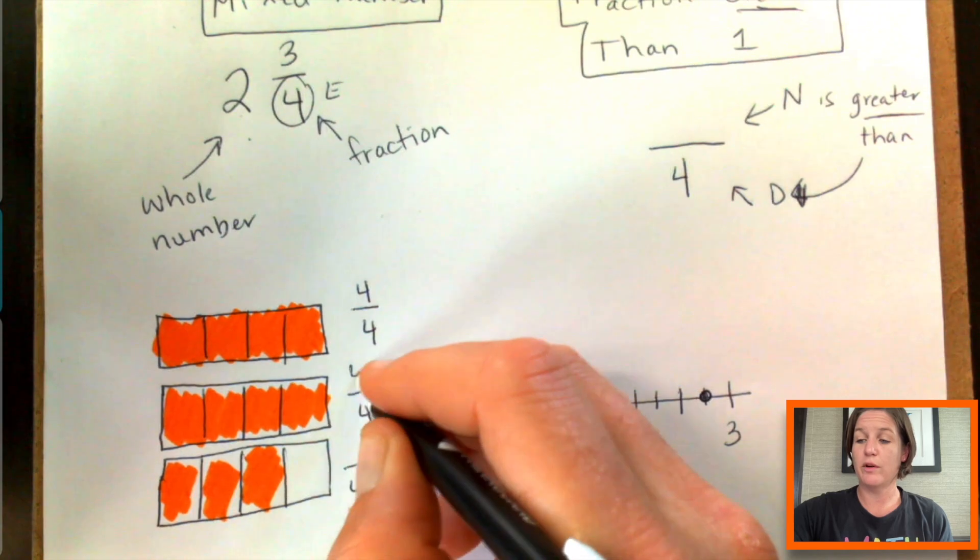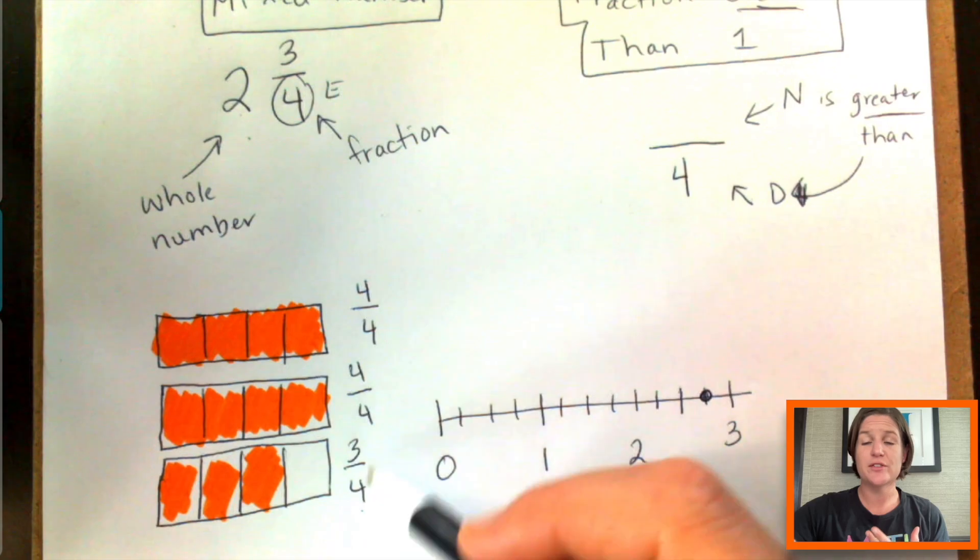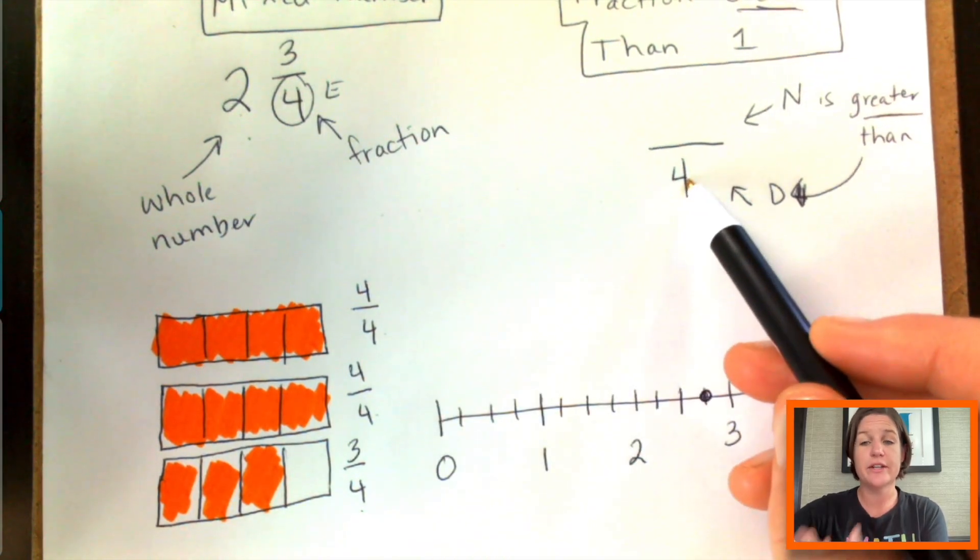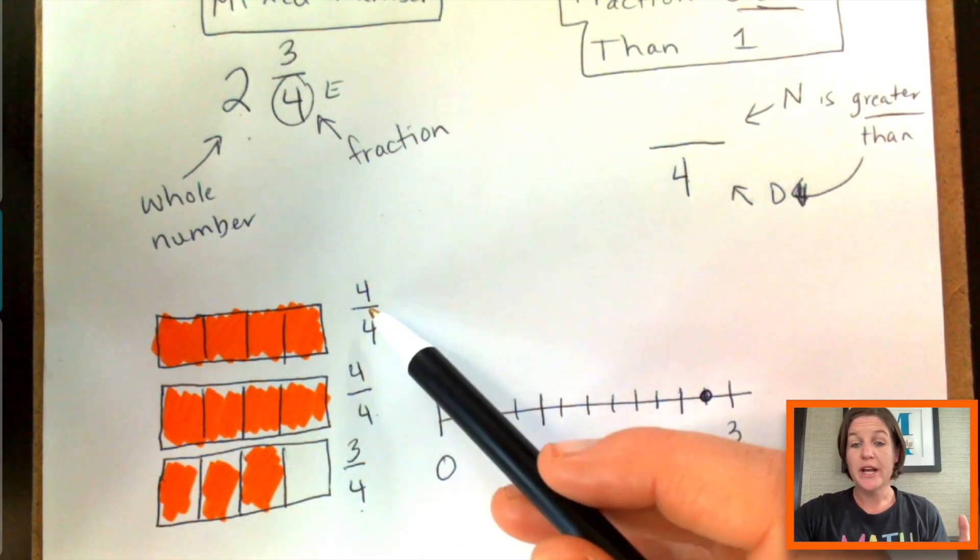So here we have four fourths, here we have four fourths, and here is three fourths. So as you can see, our denominator is always four. That's why the denominator here is four for this particular example, for two and three fourths.